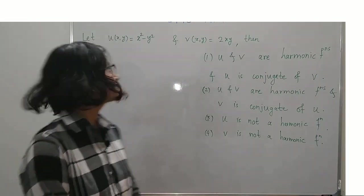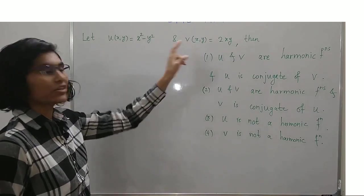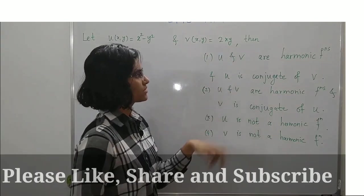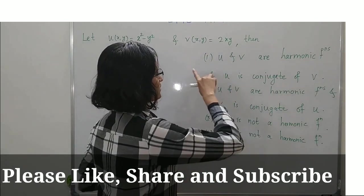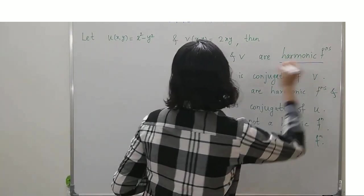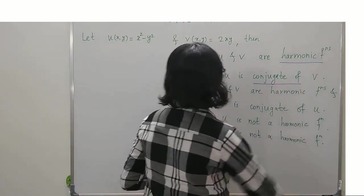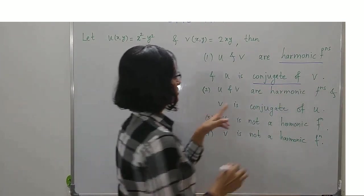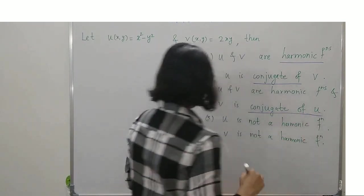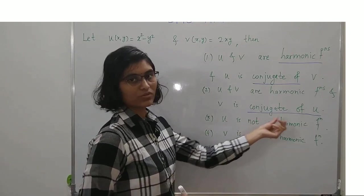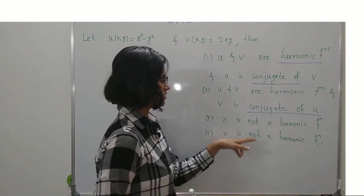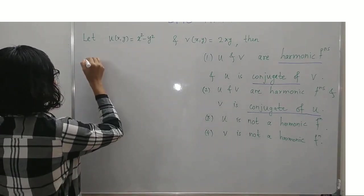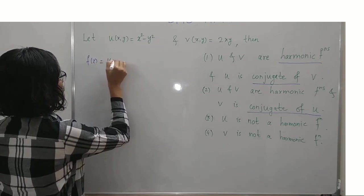The next question: given u = x² - y² and v = 2xy, which options are correct? Option 1 says u and v are harmonic and u is conjugate of v. Option 2 says u and v are harmonic and v is conjugate of u. Option 3 says u is not harmonic. Option 4 says v is not harmonic. Note that if we take f(z) = u + iv.